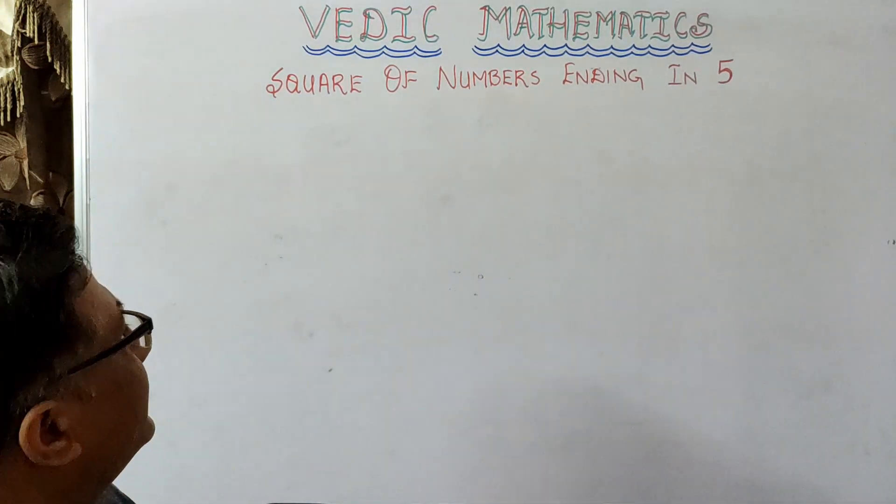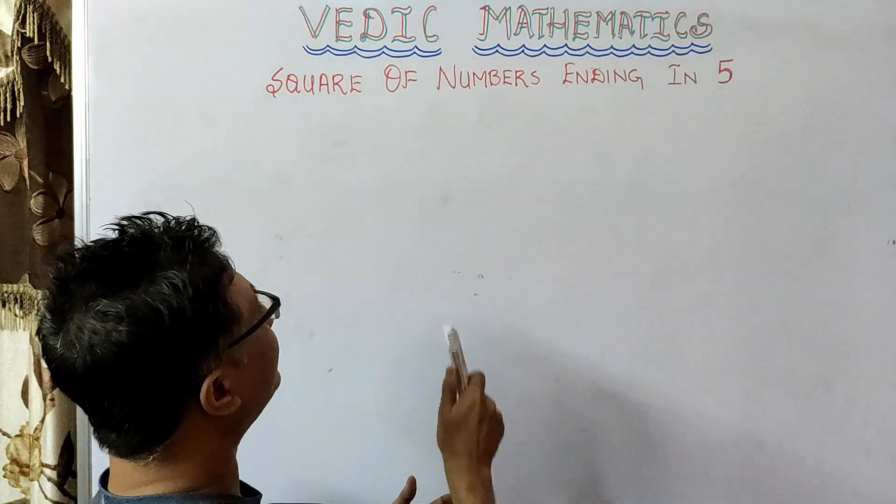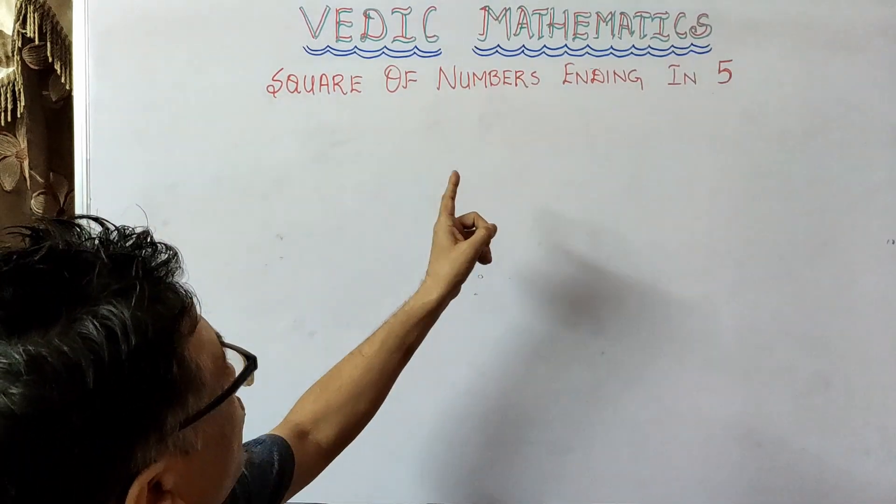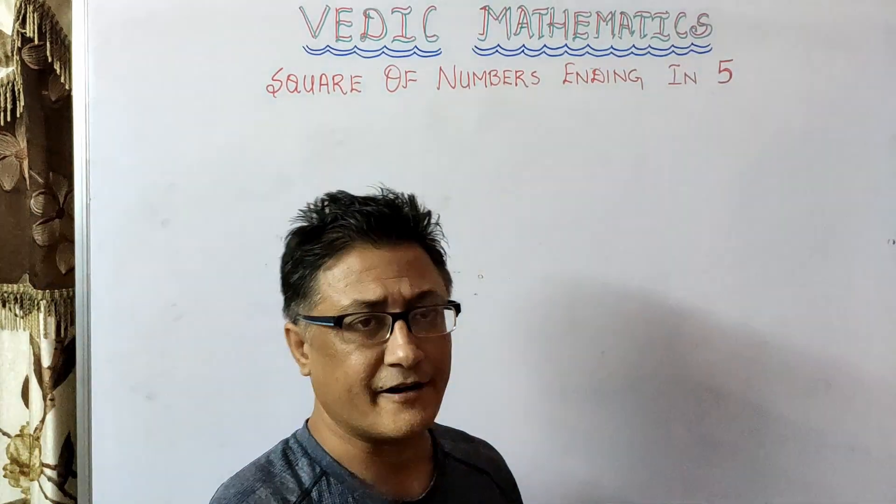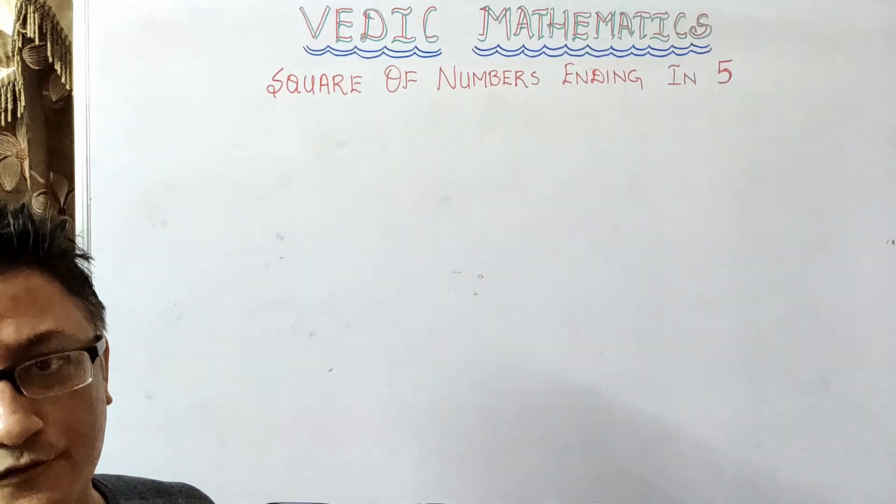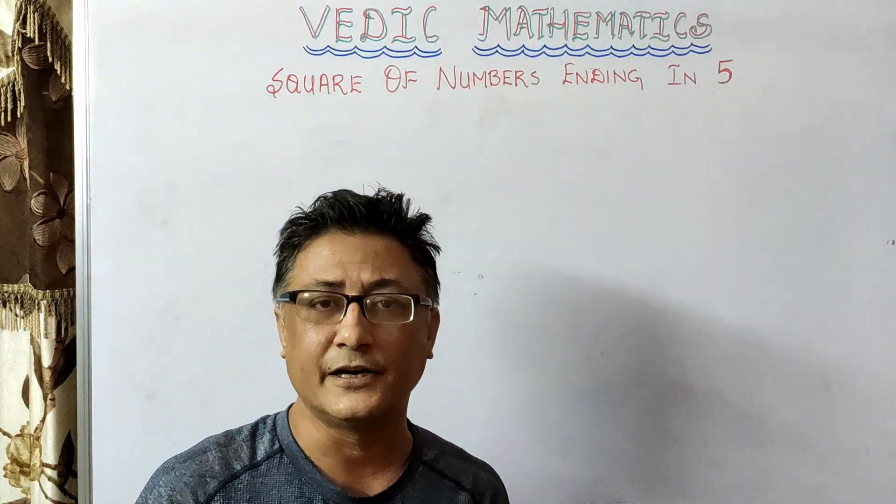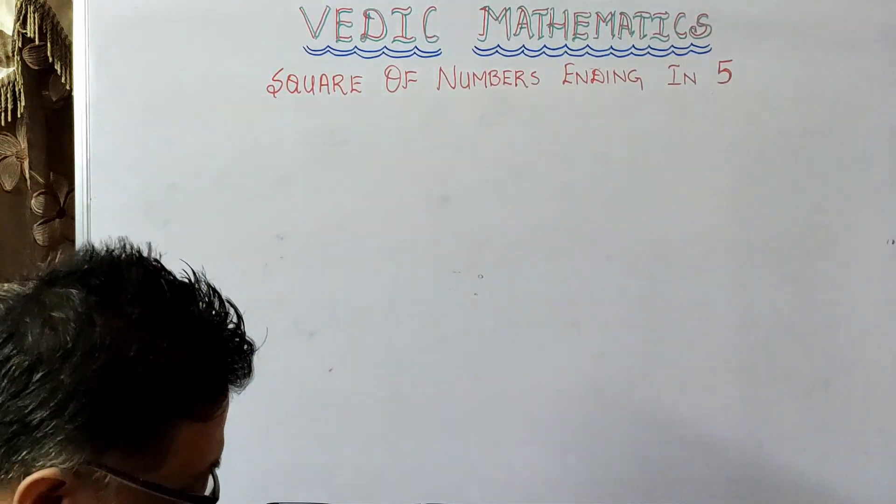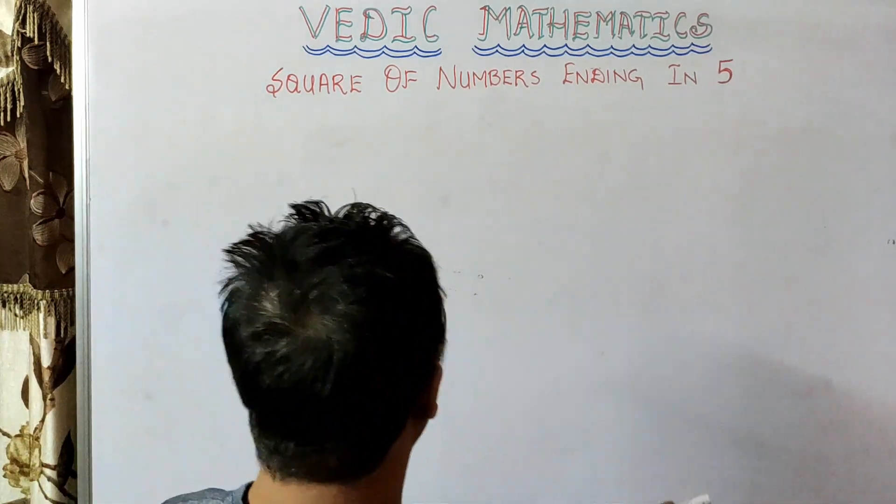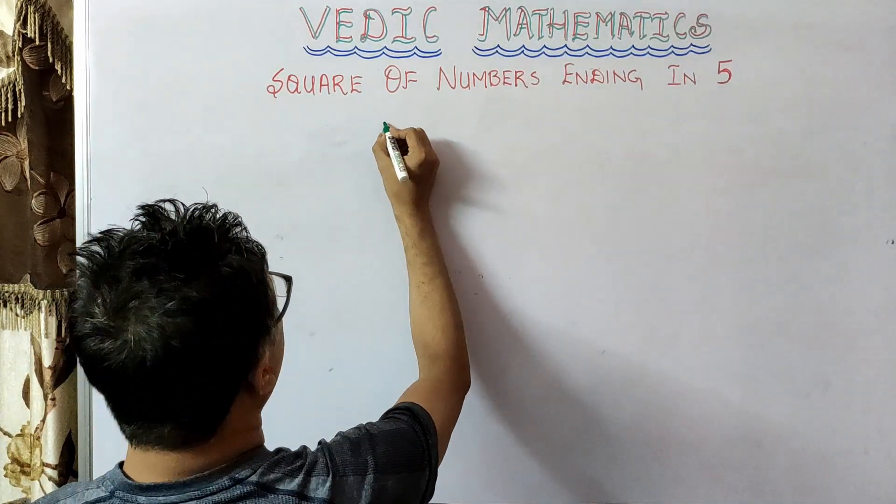this video we are sharing another trick and that is to calculate the square of those numbers which end in 5, for example 15, 25, 225, 335 and so on. So now let's start. For example, if you have to